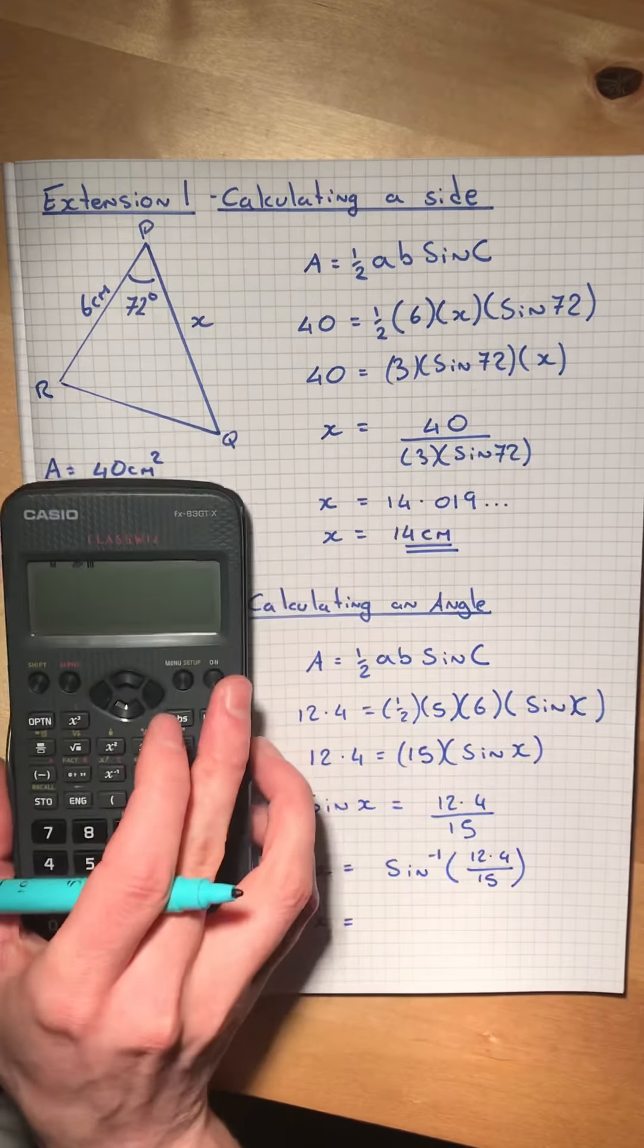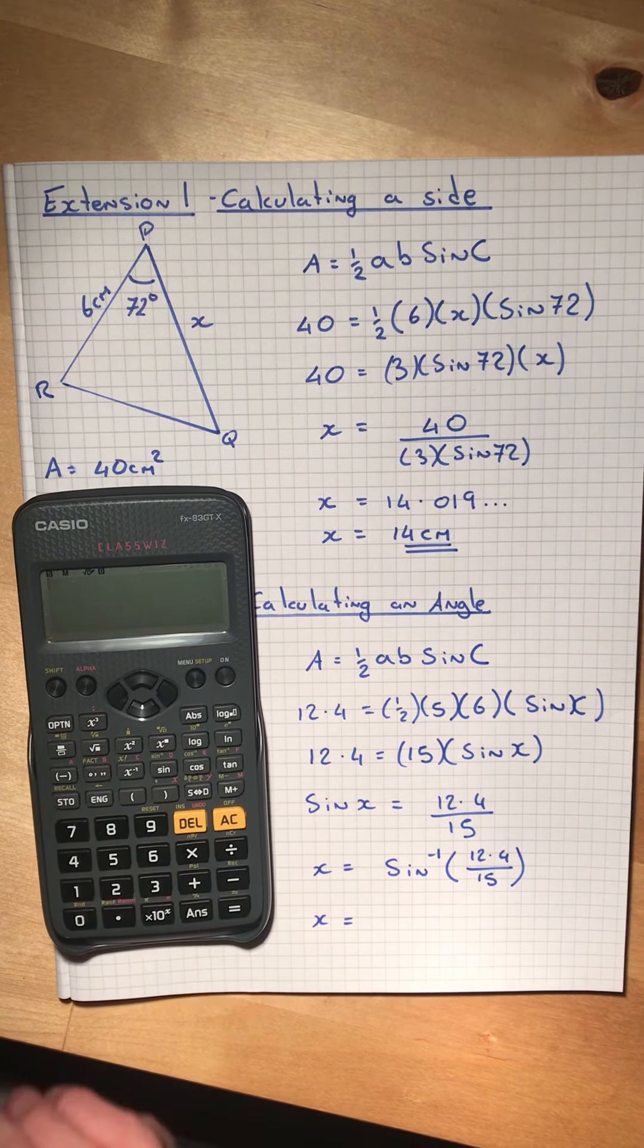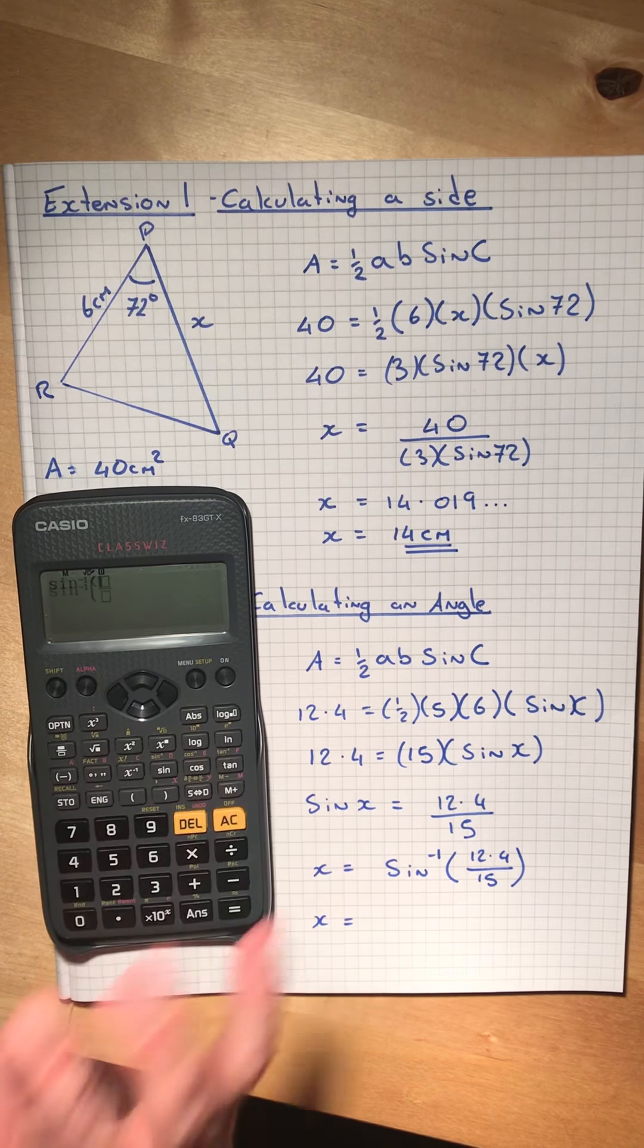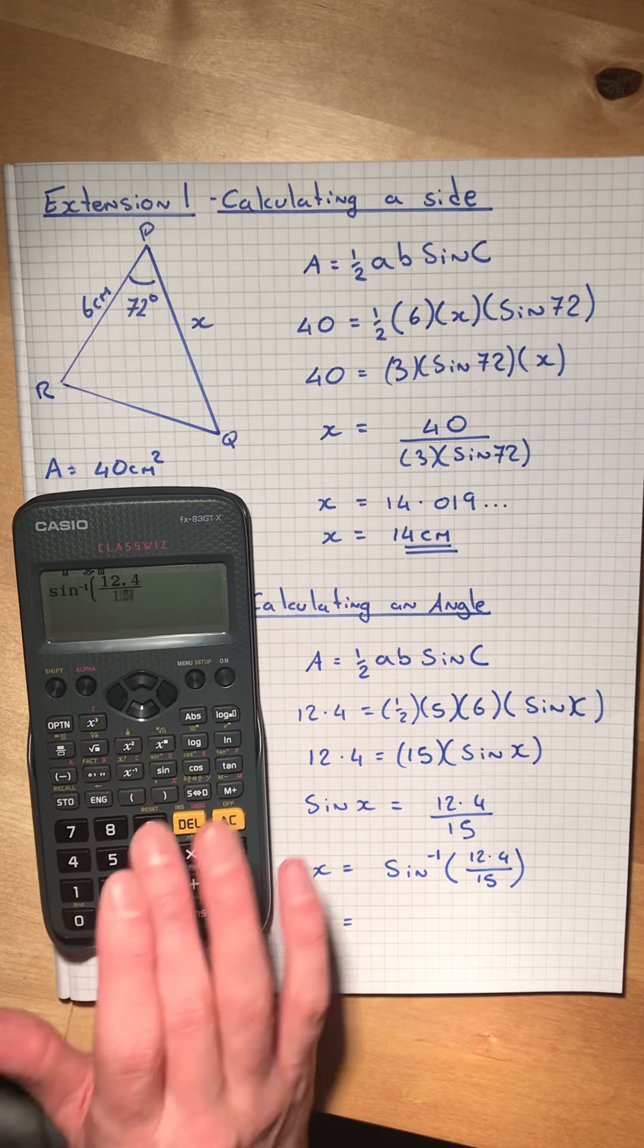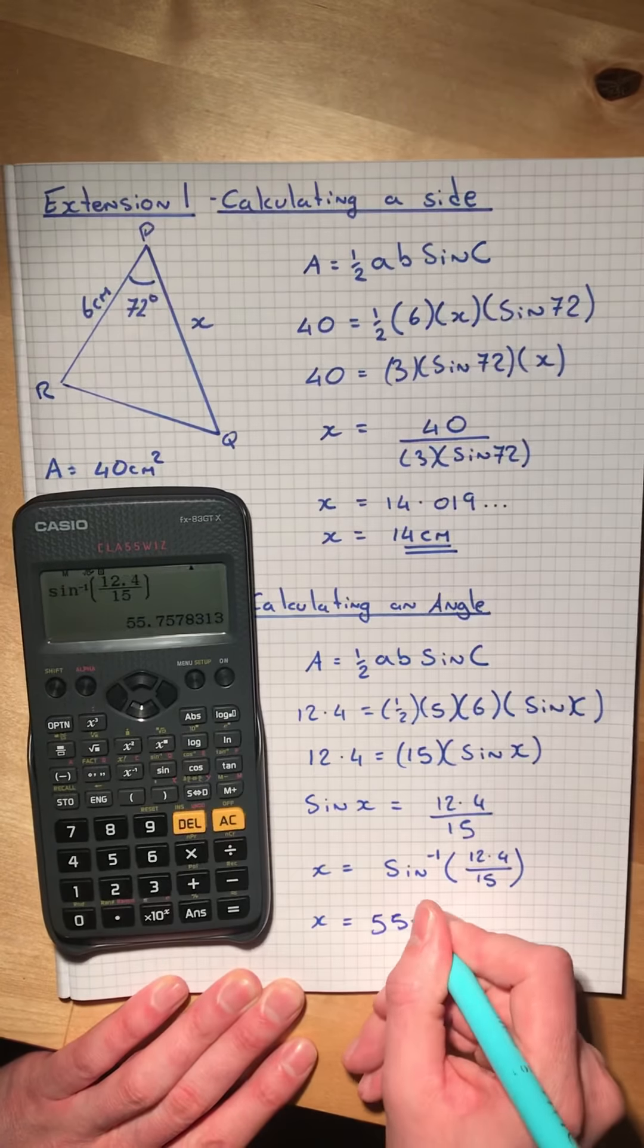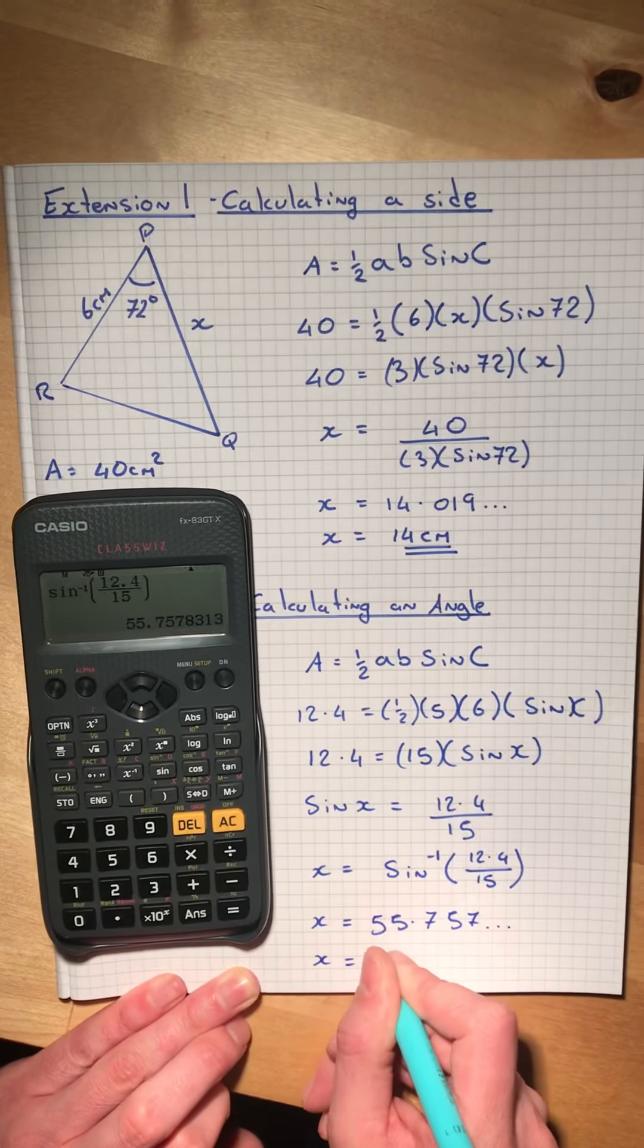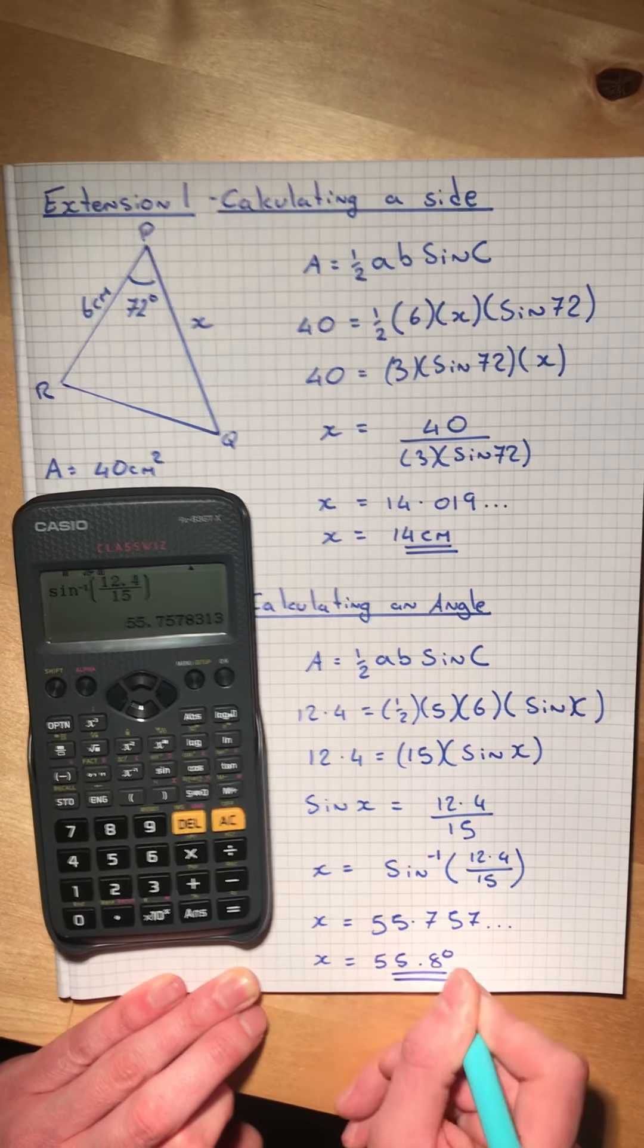Get our calculator. We're doing the shift button, the second function button, sine - you see sine to the negative 1 - fraction 12.4 divided by 15, gives us 55.757, which rounded to one decimal place is 55.8 degrees.